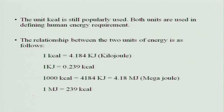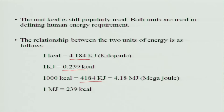The unit kilocalories is still popularly known and both units are used for defining the human energy requirement. 1 kilocalorie is equal to 4.184 kilojoules and 1 kilojoule is equal to 0.239 kilocalories. Therefore, 1000 kilocalories is equal to 4184 kilojoules or 4.18 megajoules, and 1 megajoule is equal to 239 kilocalories.